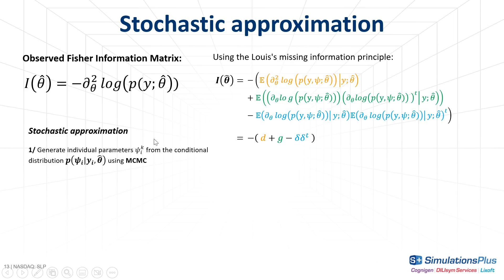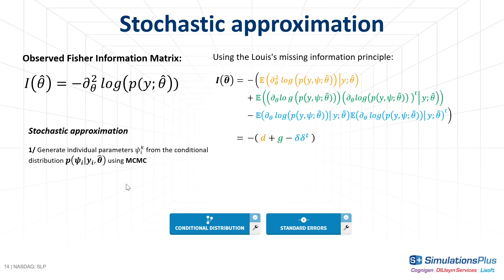The main steps of this method are the following. At each iteration k, we generate individual parameters psi_i from the individual conditional distributions, where psi_i are the individual parameters for individual i, theta hat are the estimated population parameters, and y_i the data for individual i. Notice that this is also what is done by the task conditional distribution. This means that if the task conditional distribution has been run before the task standard errors, the first iterations are very fast because Monolix reuses the individual parameters sampled during that task.